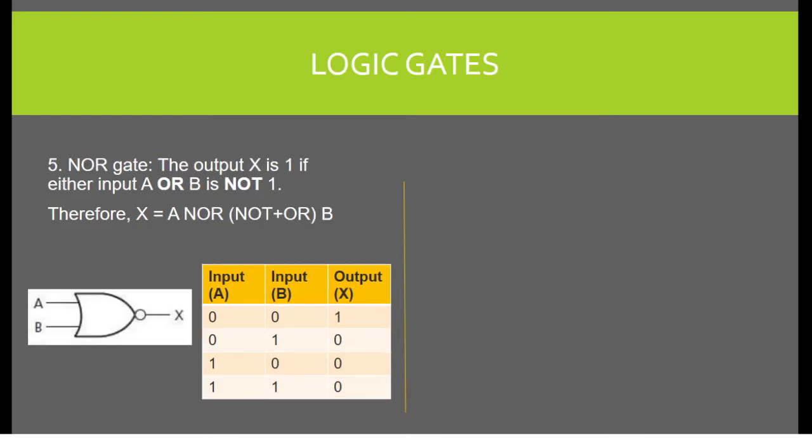NOR gate. The output X is 1 if either input A or B is NOT 1. Therefore, X equals NOR A or B. So when the inputs are either 1-1 or 1-0, the output is 0.